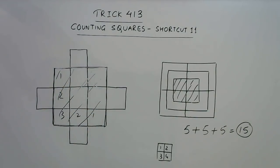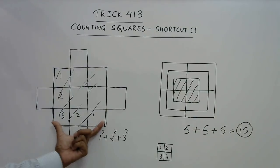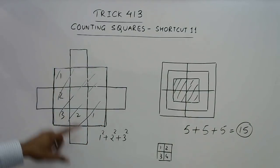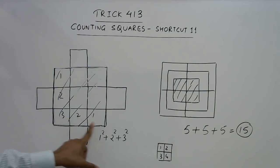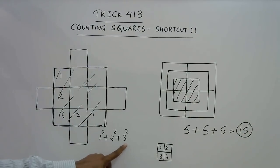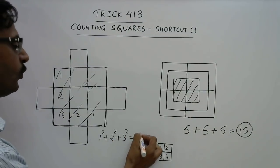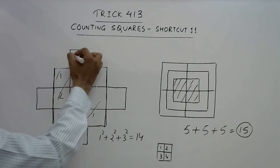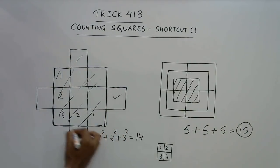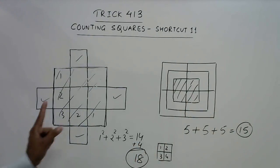How do you find it? This is 1 squared plus 2 squared plus 3 squared. Whenever there are equal numbers of squares along the length and breadth, square each number and add them. So this becomes 9 plus 4, that is 13, plus 1, that is 14. Then we have 1, 2, 3, 4 squares left out, so plus 4. In total you have 18 squares in this figure.